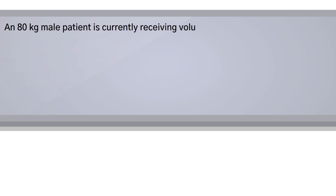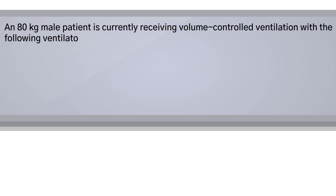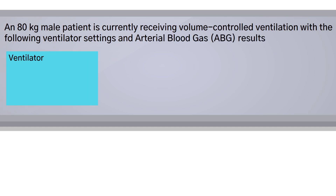An 80-kilogram male patient is currently receiving volume-controlled ventilation with the following ventilator settings and ABG results. His ventilator settings include an FiO2 of 40%, a rate of 12 breaths per minute, and a tidal volume of 500 milliliters.